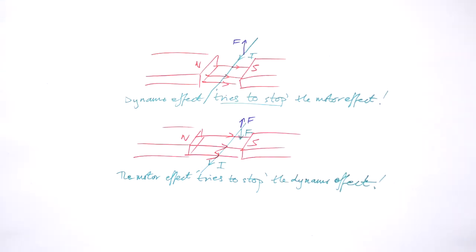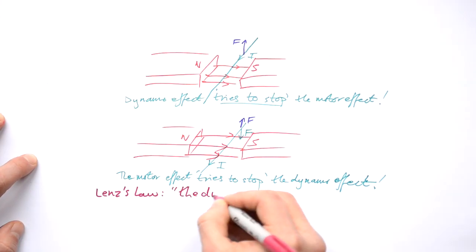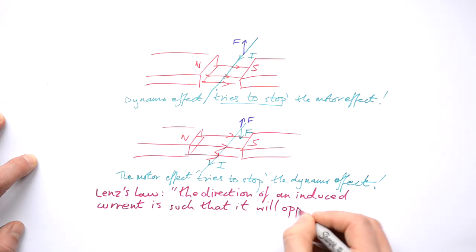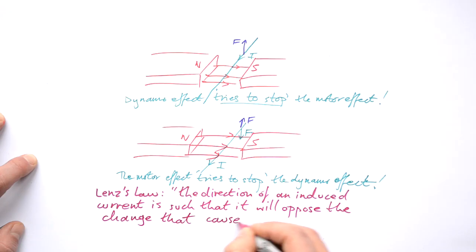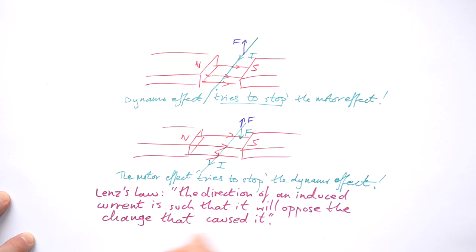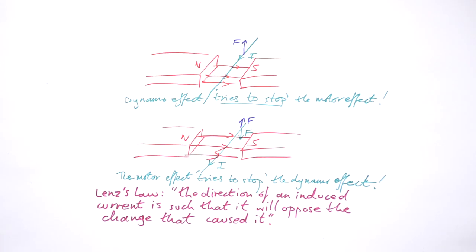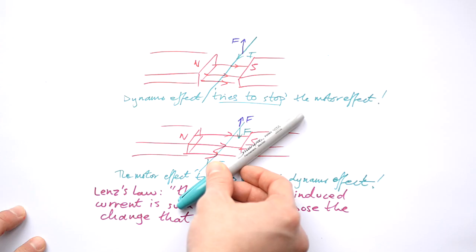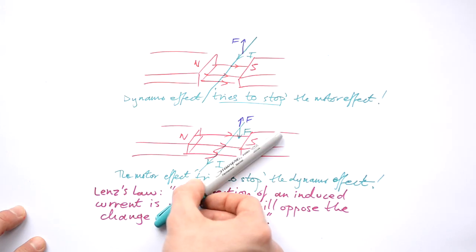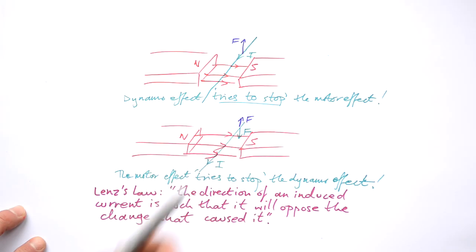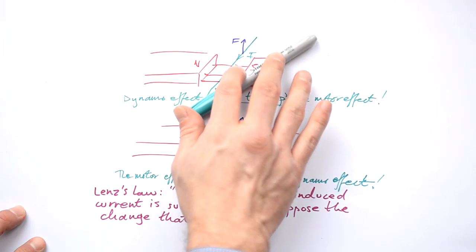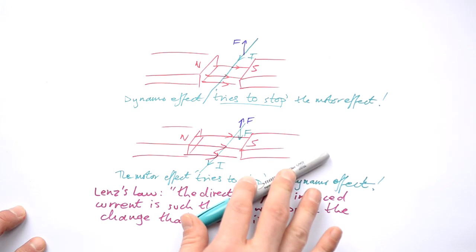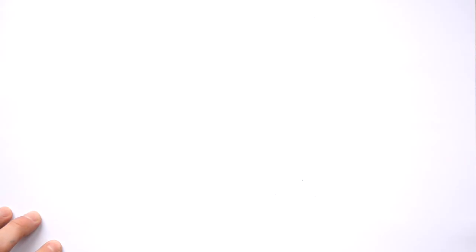We've basically just derived Lenz's law using that idea: the direction of an induced current is such that it will oppose the change that caused it. Applying Lenz's law here — we push a wire downwards, producing a current, but that current produces its own equal and opposite force pushing it back upwards. If we apply a force on a wire through a magnetic field, it effectively reaches terminal velocity, because the reaction force due to the motor effect equals the applied force.